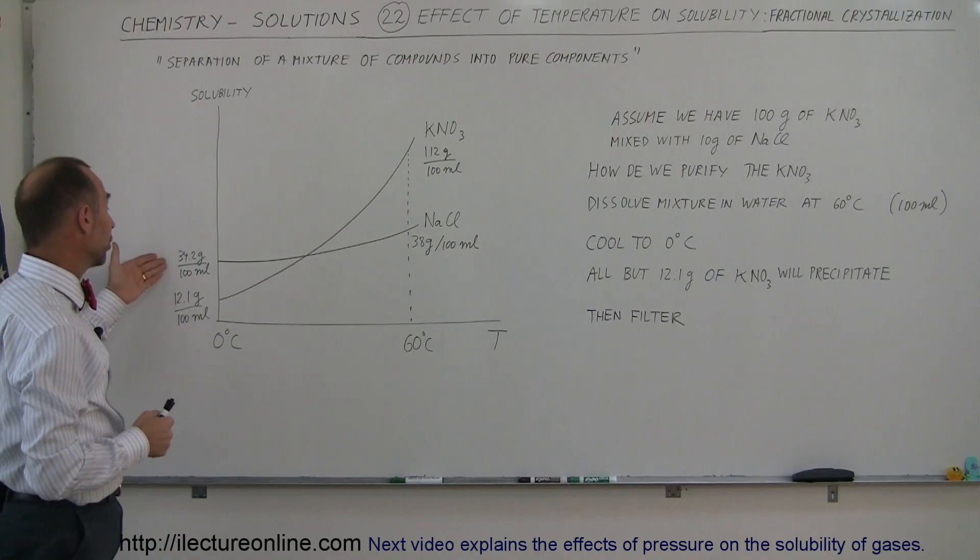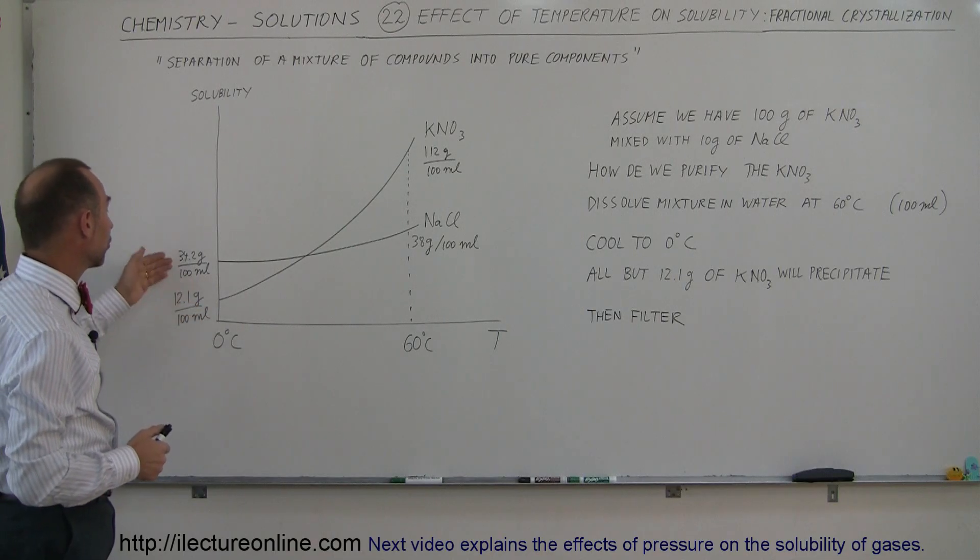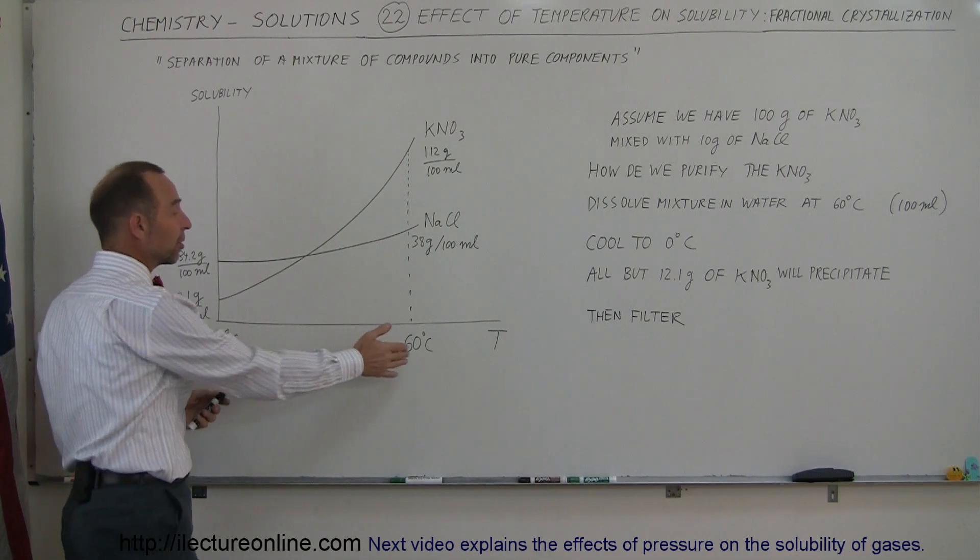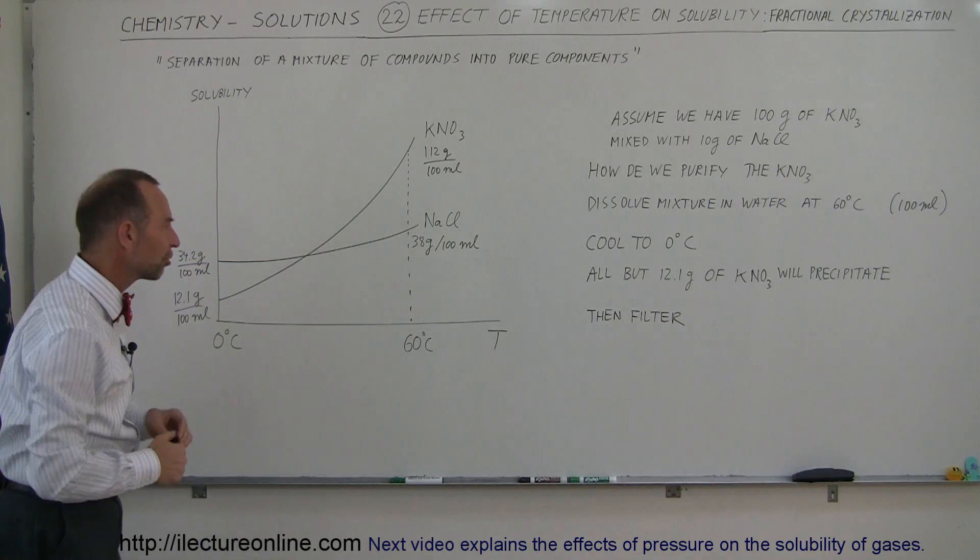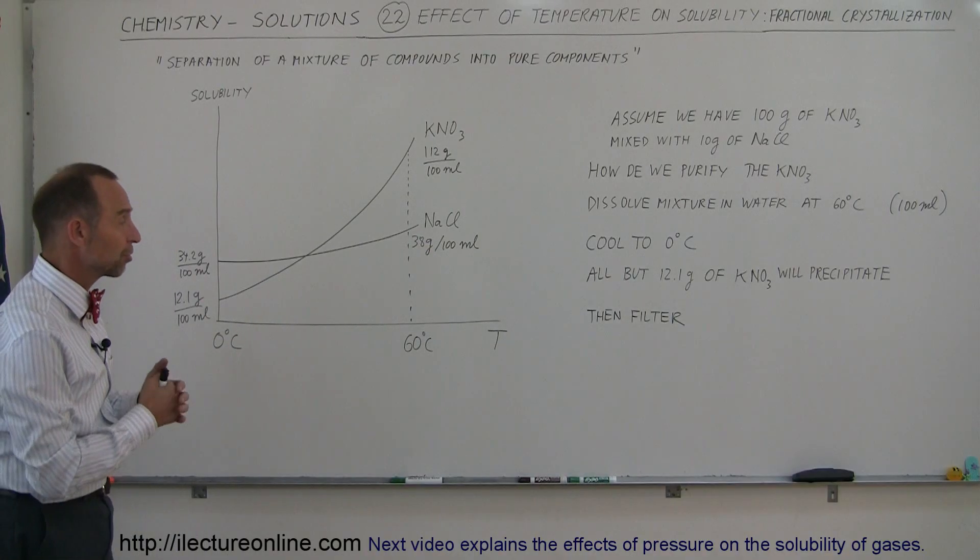When it comes to sodium chloride, at zero degrees centigrade, 100 milliliters of water can dissolve 34.2 grams of sodium chloride, and at 60 degrees centigrade, we can dissolve 38 grams per 100 milliliters of water. So you can see that for sodium chloride, there's not a lot of difference with the 60 degree temperature change.